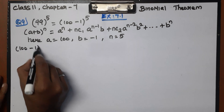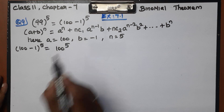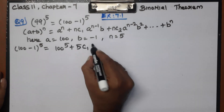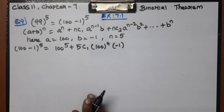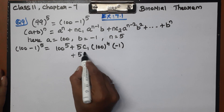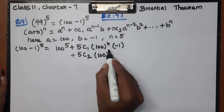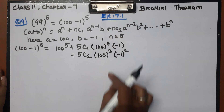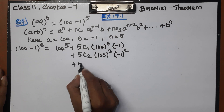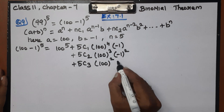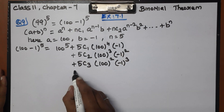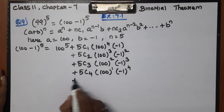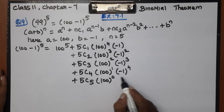Applying this with A = 100, B = -1, and N = 5: we get 100 power 5, plus 5C1 times 100 power 4 times minus 1, plus 5C2 times 100 power 3 times minus 1 squared, plus 5C3 times 100 power 2 times minus 1 cubed, plus 5C4 times 100 power 1 times minus 1 power 4, plus 5C5 times 100 power 0 times minus 1 power 5.